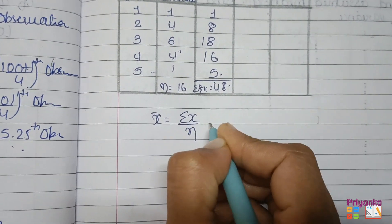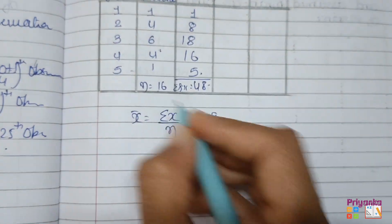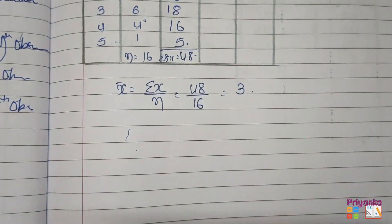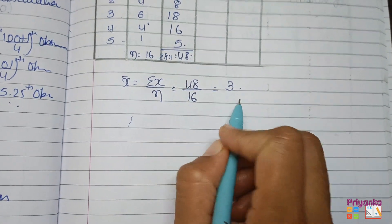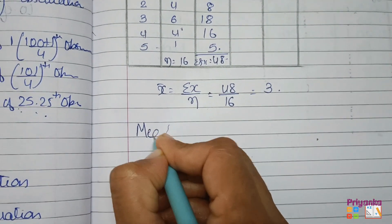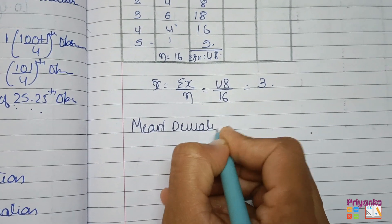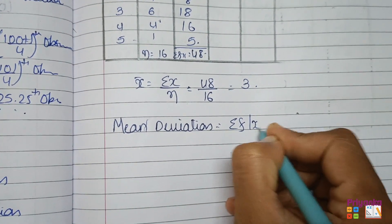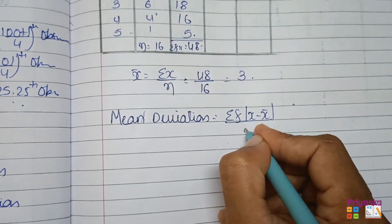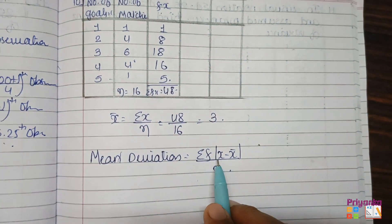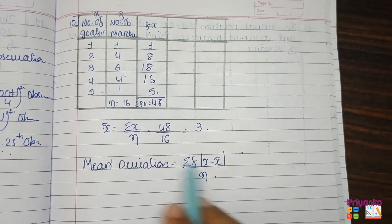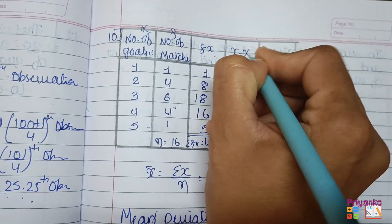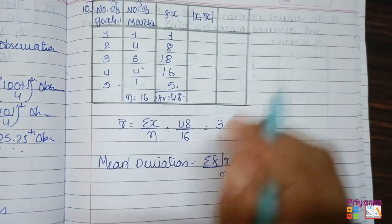Mean equals sigma fx upon n, that is 48 divided by 16 — remember, the total of the frequencies is your n — giving us the mean of 3. After finding the mean, write down the mean deviation formula: sigma f times |x minus x-bar| upon n. Now we have the x column and x-bar equals 3, so let's calculate |x minus x-bar|.